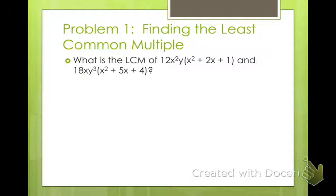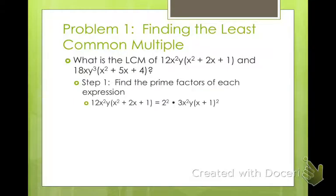So the first thing we want to do is find the prime factors of each expression. So if we broke this down into its simplest terms for each part, what would it be? So if we rewrote 12x²y(x²+2x+1), we could break apart 12 and say 12 is 4 times 3, and we can break apart 4 as 2 times 2. So that's 2² times 3 and x² times y. And then we can factor x²+2x+1 as (x+1)². So this is all of the numbers in their most simplest terms: 2² times 3 times x² times y times (x+1)².